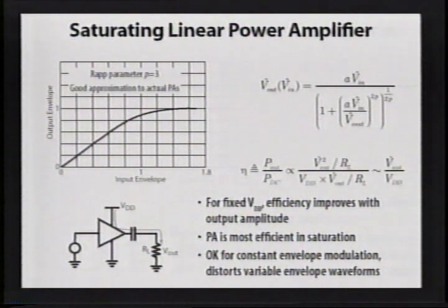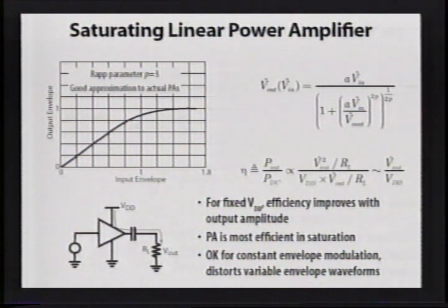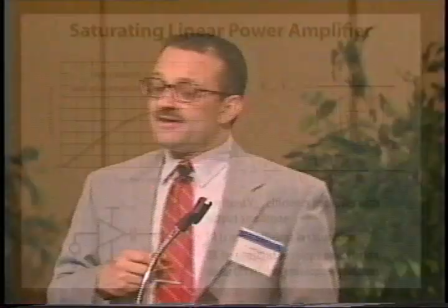For a simple amplifier drawing all current supplied to the load from the supply, efficiency is defined as output power delivered to the load relative to power taken from the supply voltage, amounting to the ratio of the output voltage swing peak divided by the supply voltage. For fixed supply voltage, efficiency improves with output amplitude, so the power amplifier is most efficient as it approaches saturation. Driving into saturation for high efficiency is fine with constant envelope modulation, but for variable envelope waveforms this would be quite unsuitable. In constant envelope power amplifiers putting out a watt, efficiencies of 75 percent and higher are quite commonplace.